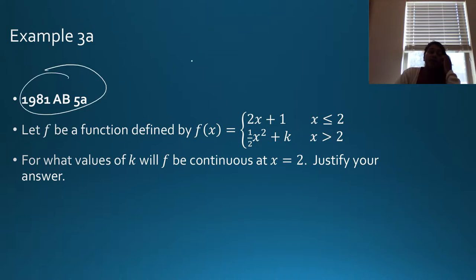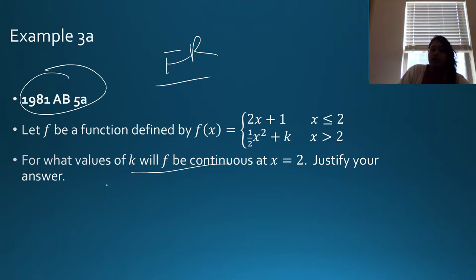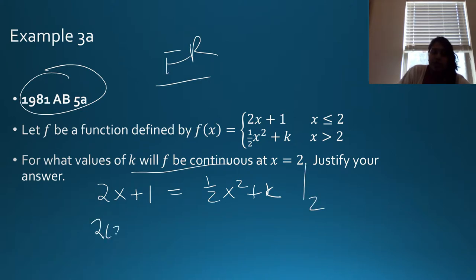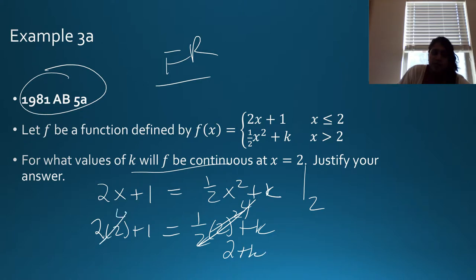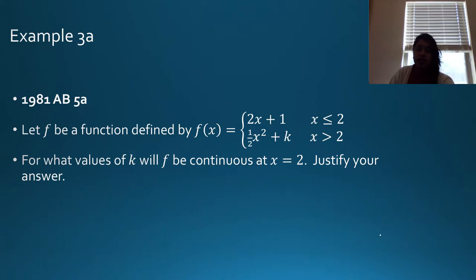Here we have a true AP question from the 1981 AB exam, a free response broken into two parts. First, to find continuity, we set 2x + 1 equal to (1/2)x² + k and evaluate at x = 2: 2(2) + 1 = (1/2)(4) + k → 5 = 2 + k → k = 3. So for f to be continuous, k = 3.